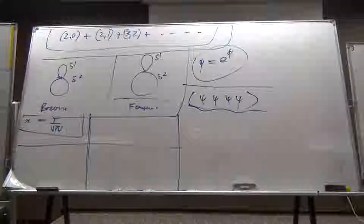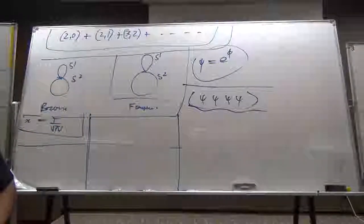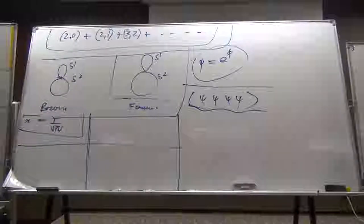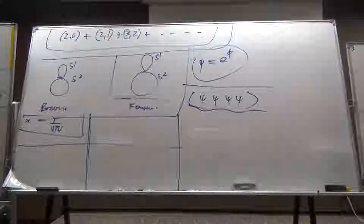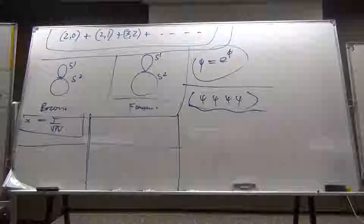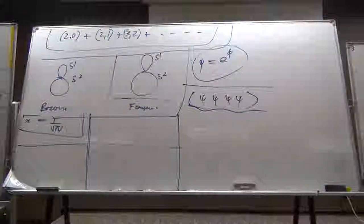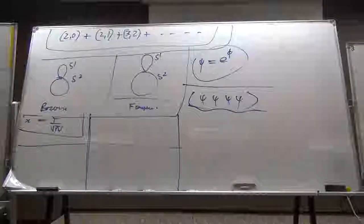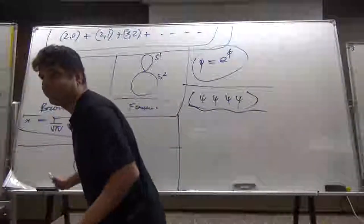That's why it's appropriate to call it a deconfinement transition. But it only exists because of the artificial scale you put in the problem, namely the size of the sphere. And it happens at a temperature of order the radius of the sphere, rather than lambda QCD, simply because there's no lambda QCD.